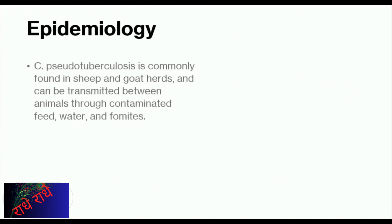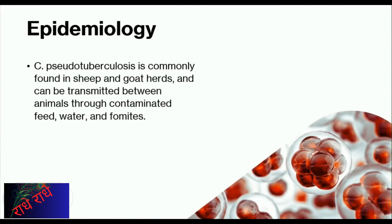Corynebacterium pseudotuberculosis is commonly found in sheep and goat herds, transmitted between them through contaminated feed, water, and fomites. Such circumstances pose a risk to the animals, and thus it is essential to take safety precautions to prevent the spread of this bacteria in order to maintain their safety.